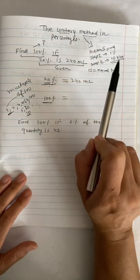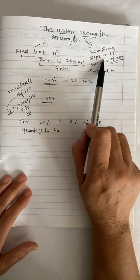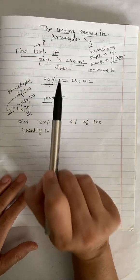Step number one, you find 1%, and then in step number two, you multiply 1% by 100. Now, why do we do that? I'm going to explain this through an example.